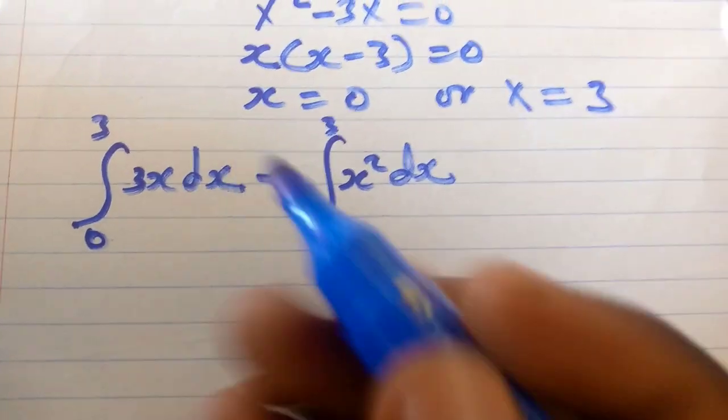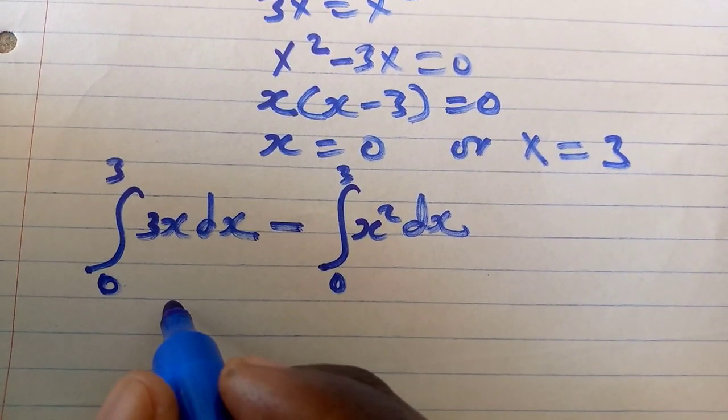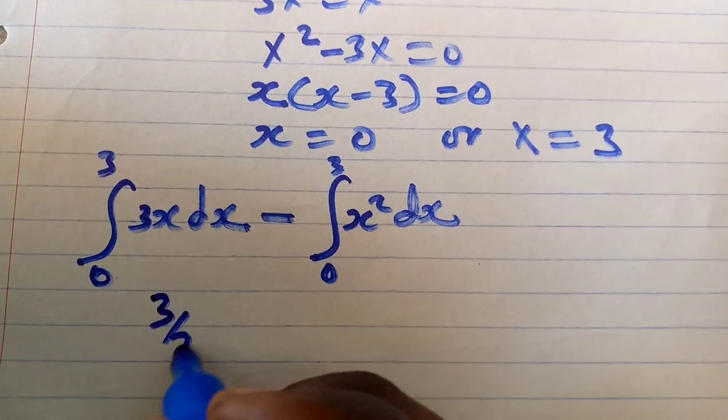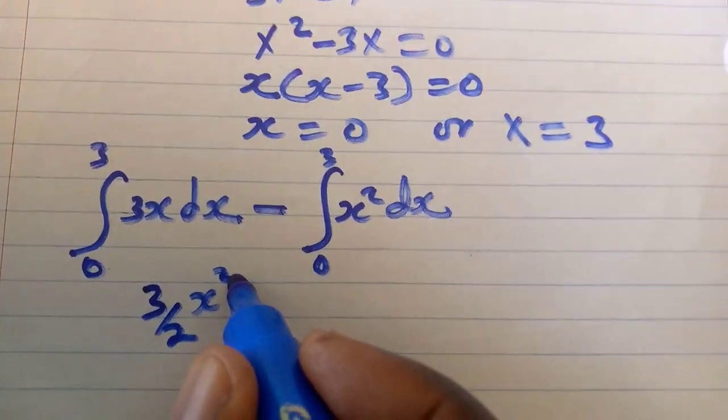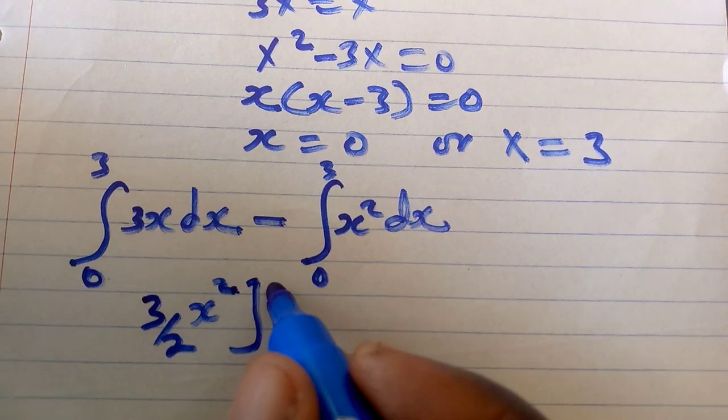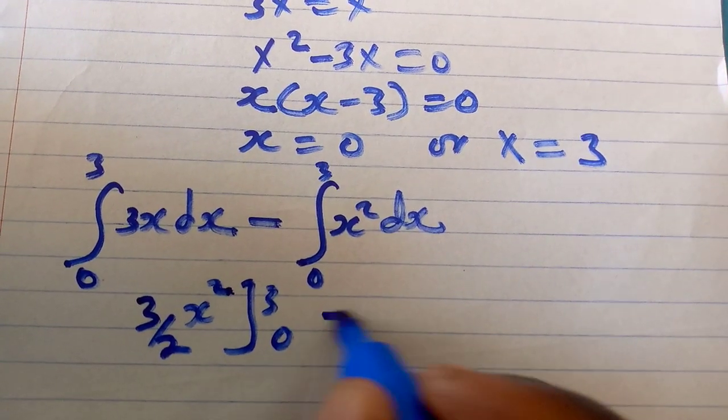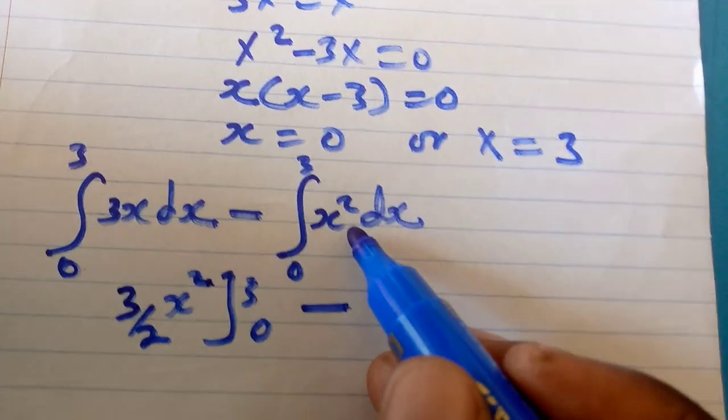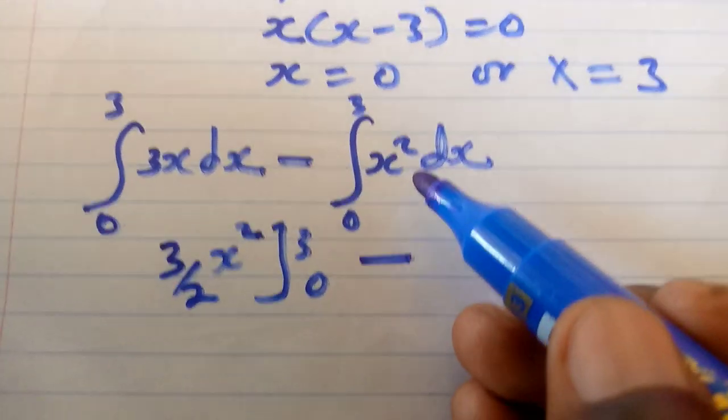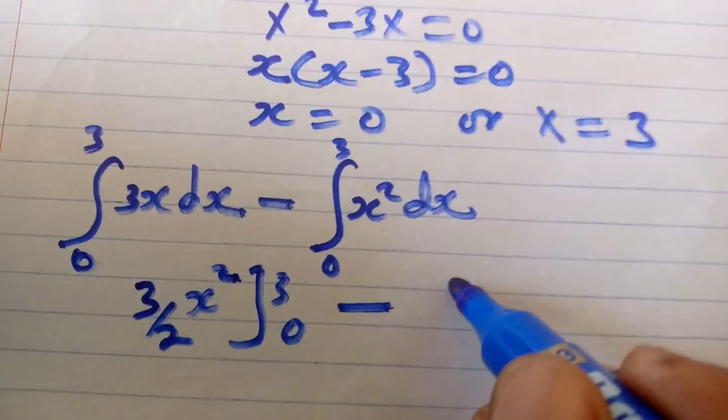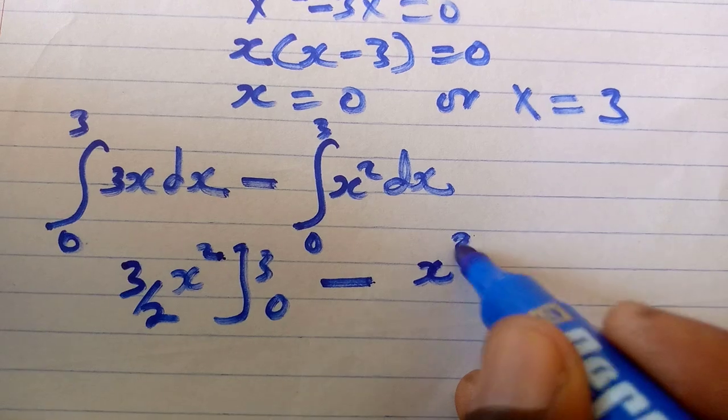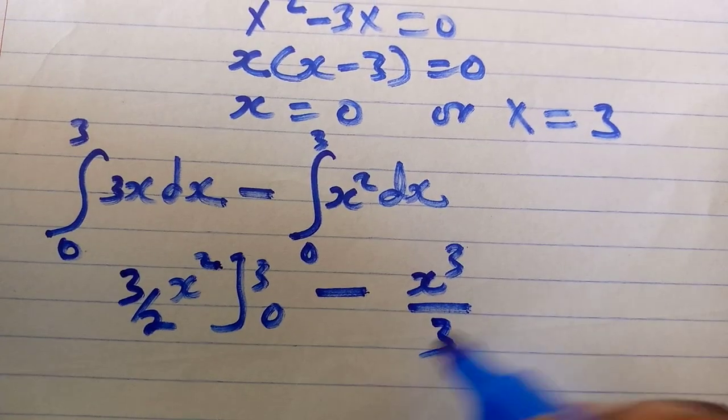Then I'm sure I'll end up with the answer. Let's see. If you integrate 3x, you get 3 over 2 x squared. And then if you integrate x squared, you're going to get x power 3 over 3.